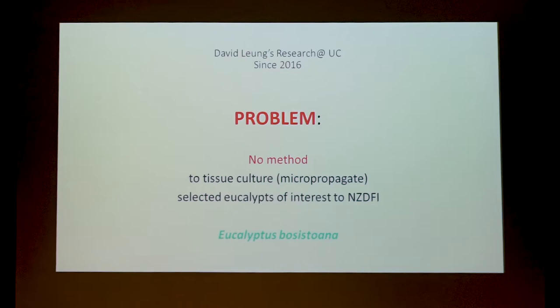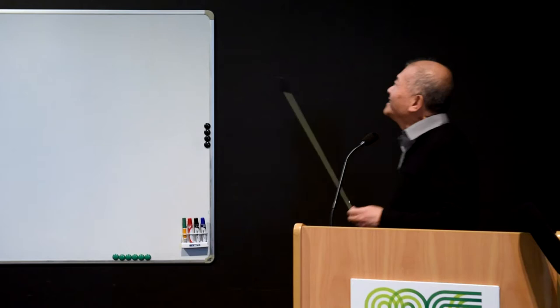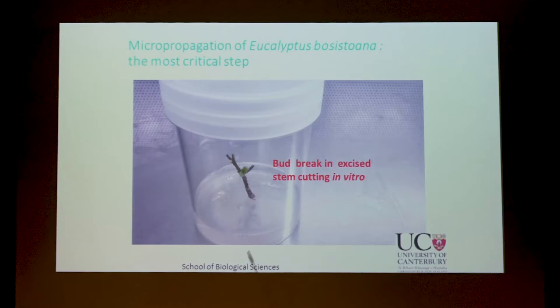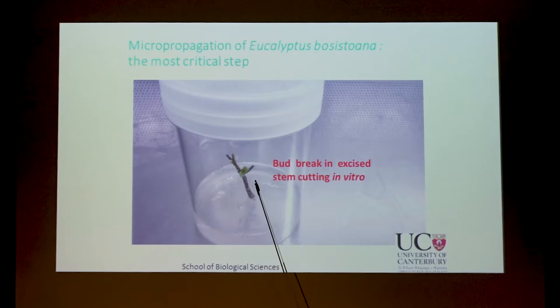I was very delighted that Sharp gave me some material to play with, so I started in 2016. This is around a one-centimeter-long cutting from Eucalyptus bosistoana. I designed the media, and I was able to observe the first visible signs of shoot bud development.